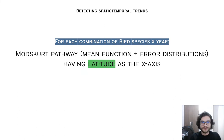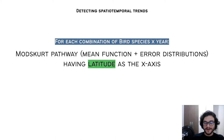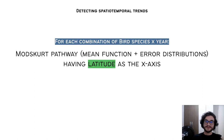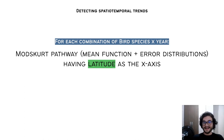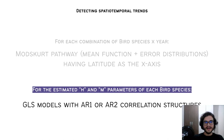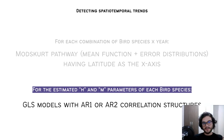For detecting temporal trends, for each combination of bird abundance and year, we ran the ModSkert pathway — with both a frequentist and a Bayesian approach — using latitude as the x-axis, since we were interested in the latitudinal modal position changing over time. Then, for the estimated H and M for each bird across all years, we ran GLS models with AR1 or AR2 correlation structures, chosen based on AIC.